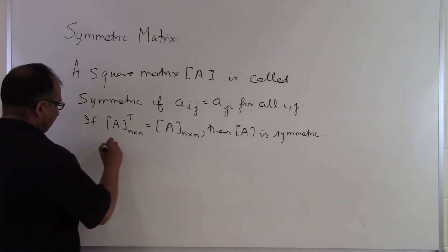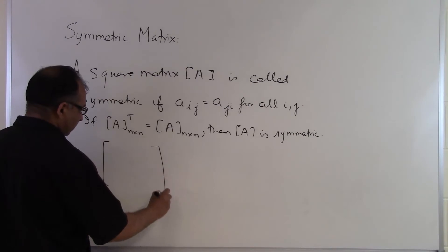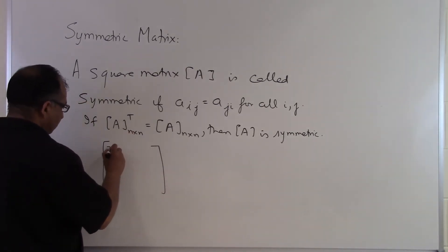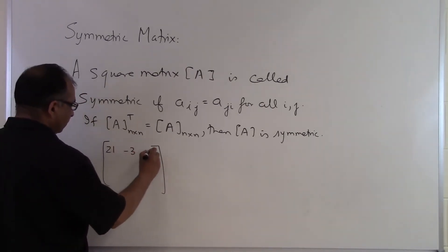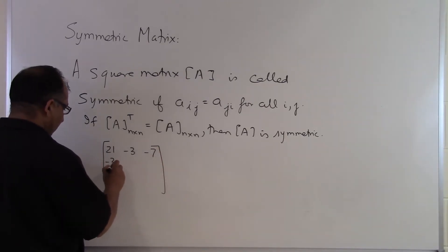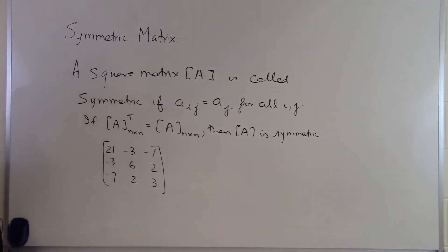Let's look at an example here. Let's take a 3 by 3 matrix so it's a square matrix: 21, minus 3, minus 7, minus 3, minus 7, 6, 3, 2, and 2. So what we are finding out here is that we have a 3 by 3 matrix, let's see whether it is symmetric or not.